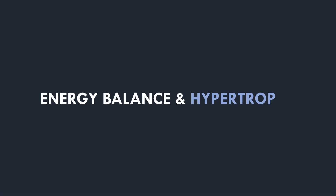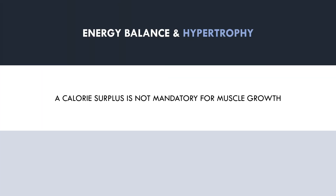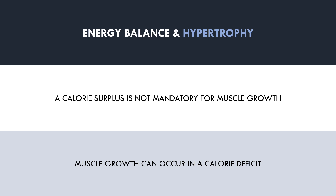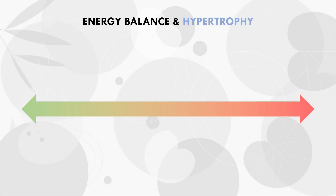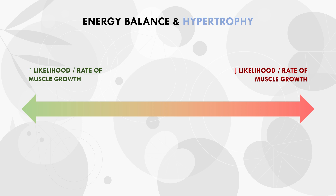Assuming we are presenting an effective hypertrophy stimulus through a solid resistance training program, how does our energy balance affect hypertrophy outcomes? It is often assumed that muscle growth can only occur in a surplus and cannot be achieved in a calorie deficit. However, evidence suggests this is not necessarily the case. Trainees can achieve a body recomposition effect, meaning muscle growth can occur in a calorie deficit, because energy balance is not the only factor influencing hypertrophy adaptations.